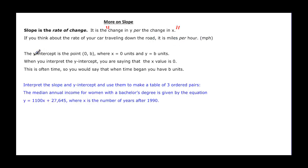That's the rate. When we want to interpret y-intercept, remember that is the point (0, b) where x is 0, and if we're interpreting it would be 0 whatever its units are and then y would be b units. So if you interpret it, you're saying that x's value is 0. So if it's in years, you're talking about the 0 year. So this is often you would say that when time began because that's a lot of times what our x is.